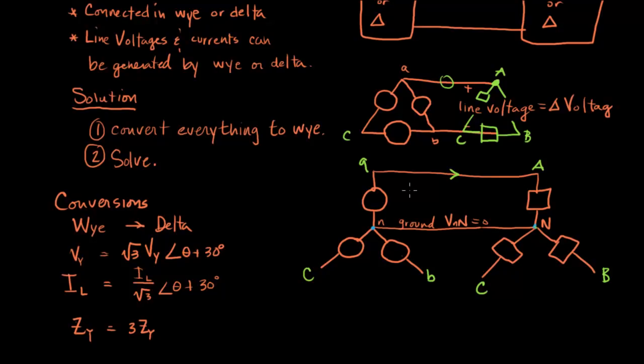So you'll know when you're dealing with a Y-connected load if you're given an impedance labeled A-to-N. And you'll know that you're dealing with a delta load if you're given an impedance with A-B, A-C, or B-C.